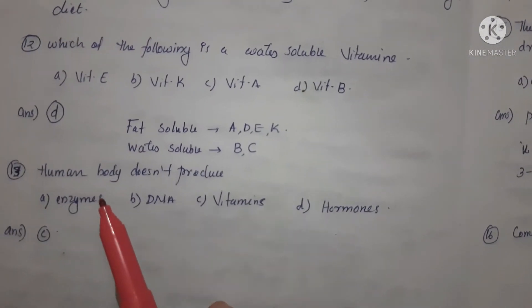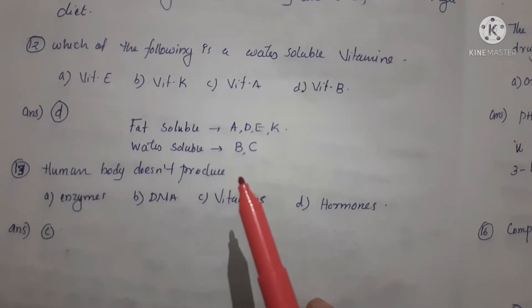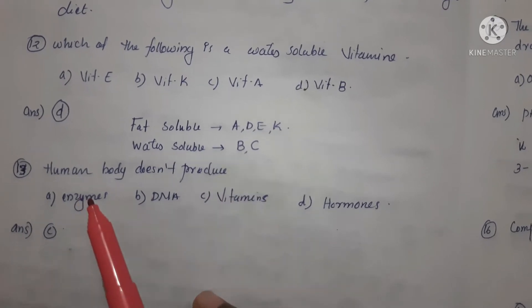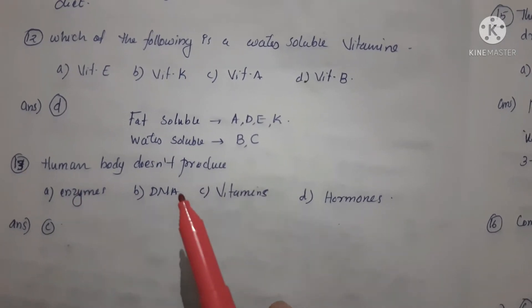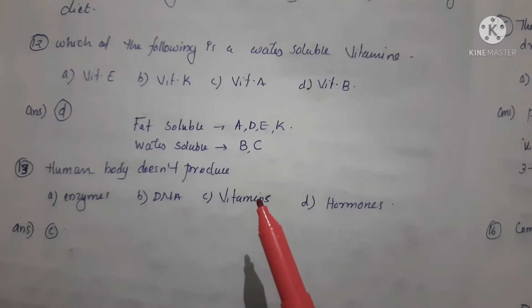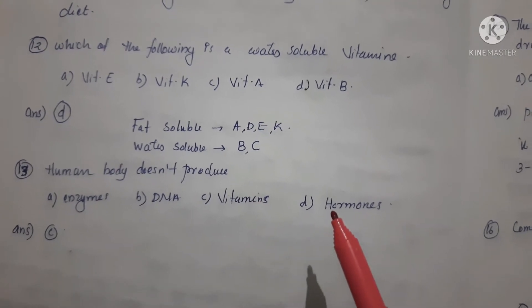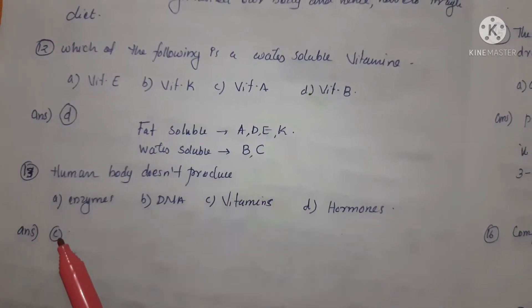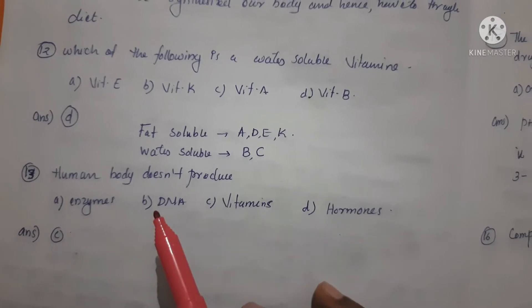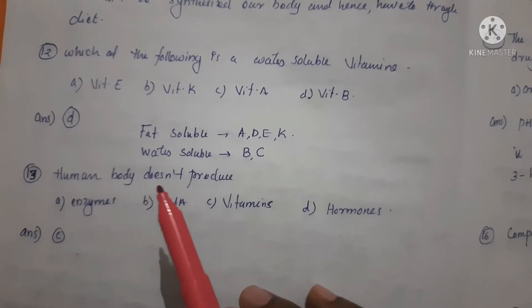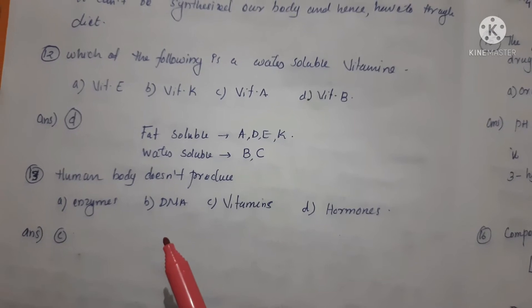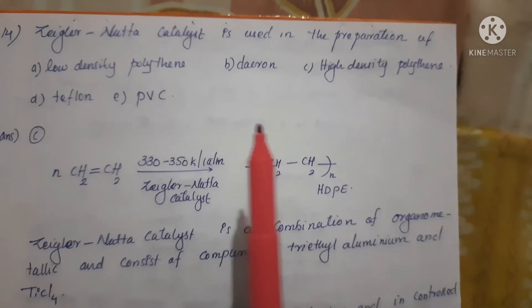Next question: human body does not produce - Option A: enzymes, Option B: DNA, Option C: vitamins, and Option D: hormones. Correct answer is Option C, vitamins. Human body does not produce vitamins.